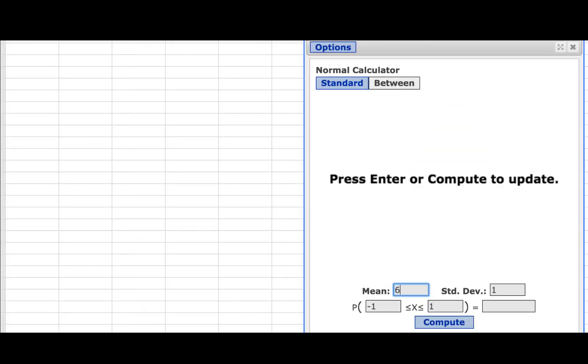So for the mean, we'll enter 68.2 and for the standard deviation, we'll enter 3.8. We are supposed to find the percentage whose heights are between 57 inches and 63 inches.